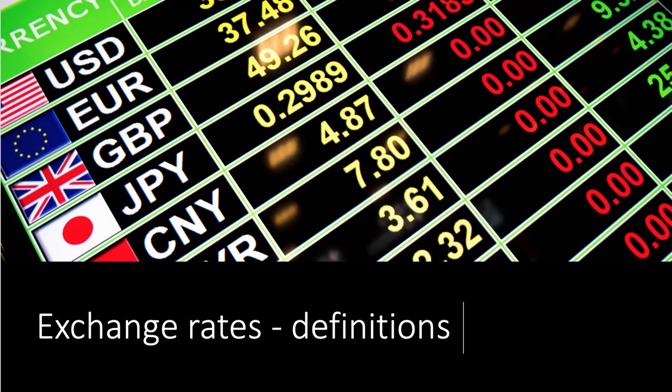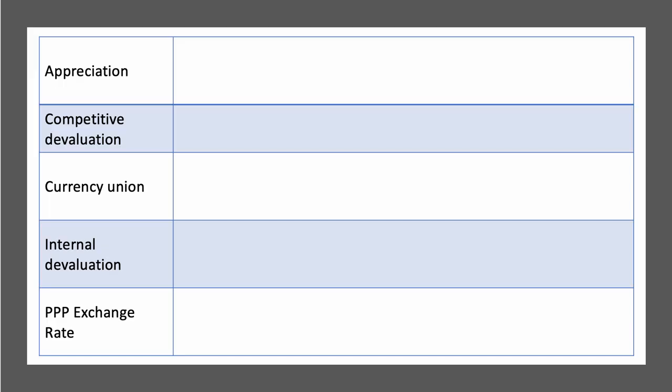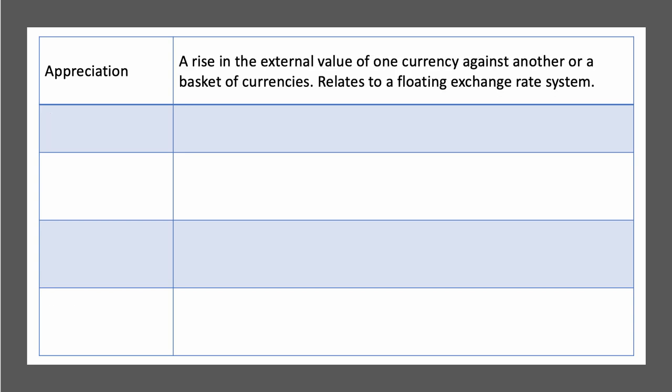Hi there and welcome to a short video looking at five key definitions linked to the economics of exchange rates. Here are our five definitions: appreciation, competitive devaluation, currency union, internal devaluation, and the PPP or purchasing power parity exchange rate. Let's go through each in turn.